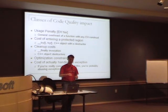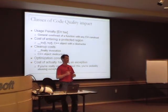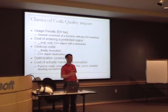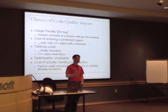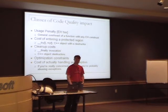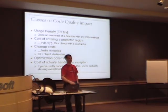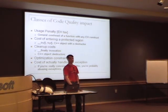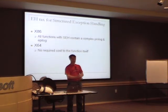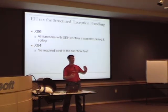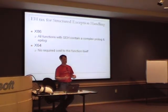Then there's cleanup costs, optimization constraints — what could a compiler do if you weren't using the exception handling model or destructors? And there's the cost of actually handling an exception. If you're really concerned about how much it costs to handle an exception, that's probably a bad design decision. Exceptions are named 'exceptions' for a reason — they shouldn't be in your normal program flow. Bjarne was here five or six years ago and was very clear that exceptions should be exceptional and should never occur in a normal program situation.